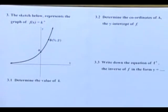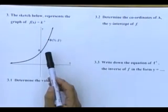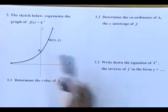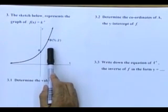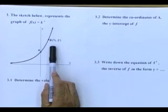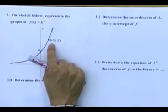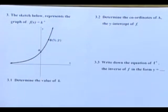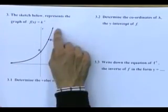Number one, it says here, the sketch below represents a graph of f(x) equals k to the power of x. Now, you see, that is an exponential graph. What's given there is point A, which we don't know. That's according to the sketch. And also, what's given is point B, where the coordinates are (1/2, 2). In other words, B has the x value of 1/2 and the y value of 2. So, that is a given graph. And as we can see, it's a positive exponential graph.